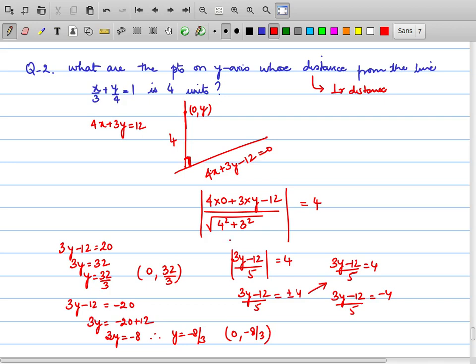Therefore in this case there are 2 points from which if we drop the perpendicular on the line, their distance would be 4. Therefore one of the answer is this and the other answer is this. Had the question said point on x-axis, we would have taken (x,0) and followed the same process.